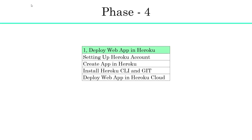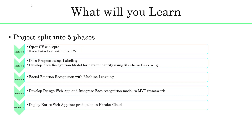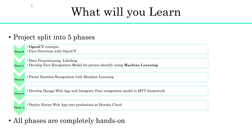Phase 4 is the final phase of the project. Here we will deploy the web app to the Heroku cloud for production. This class is completely hands-on and every topic and algorithm starts from zero, where I will teach you the essential background and mathematical concepts in each algorithm wherever required.